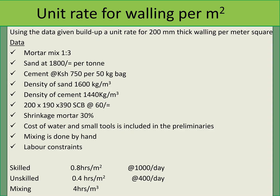The data given: mortar mix ratio is 1 to 3 sand. Cement costs 750 shillings per 50 kilogram bag. Density of sand is 1600 kilograms per meter cubed. Density of cement is 1440 kilograms per meter cubed. The size of the cement sand block is 200 by 190 by 390 millimeters, and each block goes for 60 shillings. Shrinkage of mortar is 30 percent. Cost of water and small tools is included in the preliminaries, so you don't have to include them here. Mixing is done by hand.